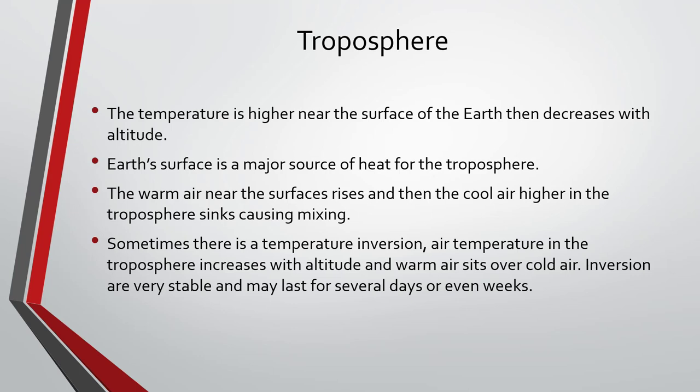The troposphere has higher temperatures near the surface of the Earth, and they decrease with altitude. The average temperature gradient — how the temperature changes as you go up and down in elevation — in the troposphere is 6.5 degrees Celsius per thousand meters. The Earth's surface is a major source of heat for the troposphere. Although nearly all that heat comes from the sun, the rocks, soil, and water of the Earth absorb the sunlight and radiate heat back to the atmosphere. The warm air near the surface rises and then cools during the day, causing mixing.